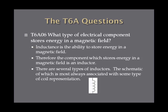What type of electronic component stores energy in a magnetic field? Inductance is the ability to store energy in a magnetic field, therefore the component which stores that energy is an inductor. There are several different types with different numbers of coils and different cores to change the strength of the magnetic field. The schematic of inductors almost always looks like some type of coil, as shown on the slide.